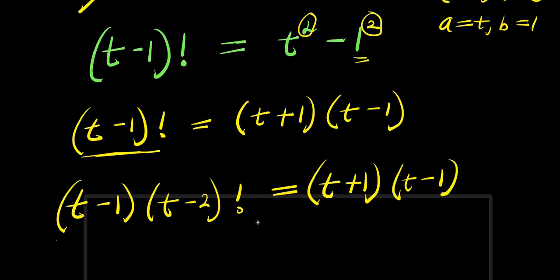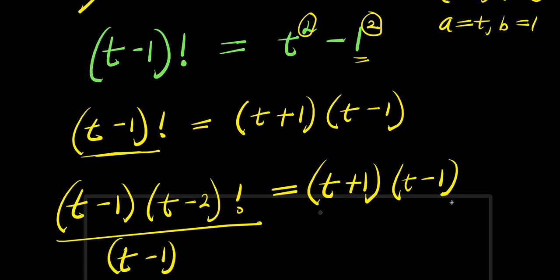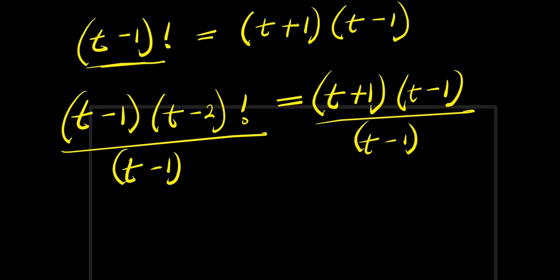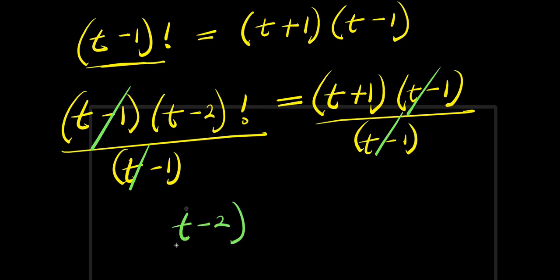Now we apply the definition of factorial again: t minus 1 factorial equals t minus 1 times t minus 2 factorial. So t minus 1 times t minus 2 factorial equals t plus 1 times t minus 1. Dividing both sides by t minus 1, we get t minus 2 factorial equals t plus 1.